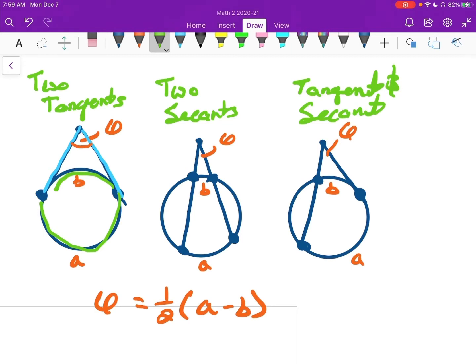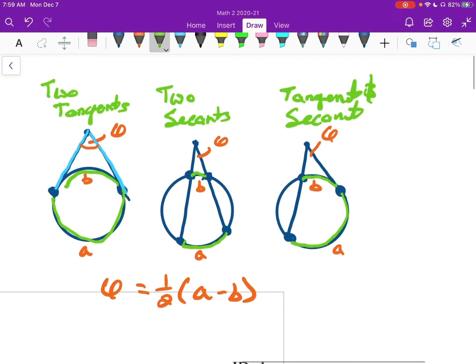And then we have two secants. Two secants, remember, are chords that are longer. So again, the angle is one half the big minus the small. And then we have a tangent and a secant. And the formula works just the same. We have one half the big minus the small. All right. All three of these scenarios have the same formula.